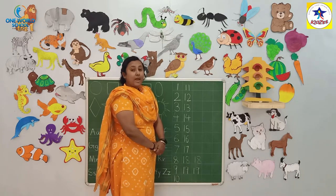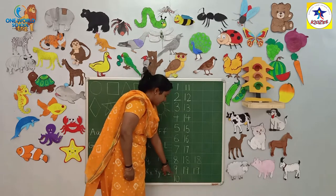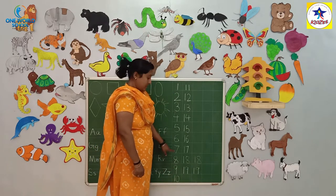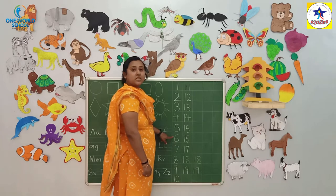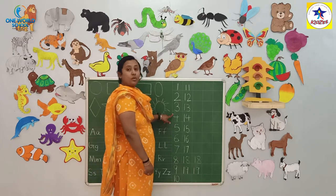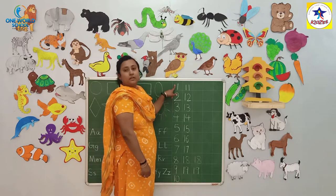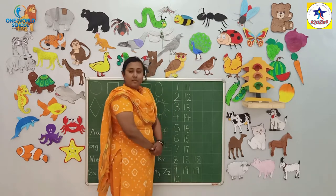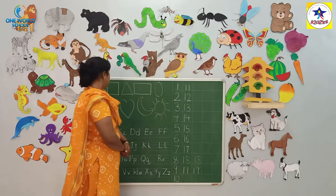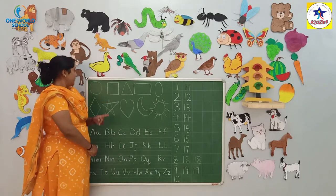अब हम करेंगे between counting कैसे है। ठीके? 1, 2, 1 — यह और between counting। ठीके? अब आपको एक activity करना है। ठीके? अब आपको activity कैसे है।